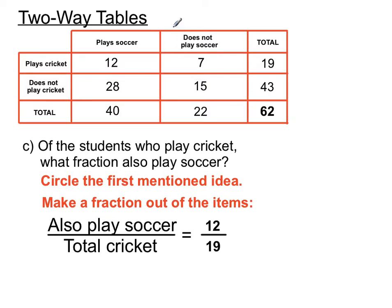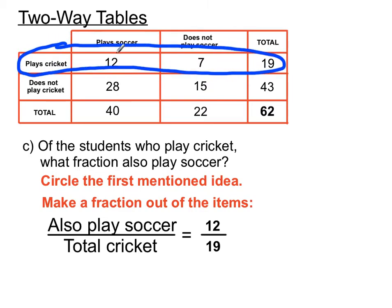This is an 'out of' fraction — the bottom number is the 'out of,' just like getting 31 out of 40 in a test means 40 goes on the bottom. So 12 over 19 is our fraction. I like focusing attention on just the first thing mentioned, because they're the only students we're considering in this particular part of the question.